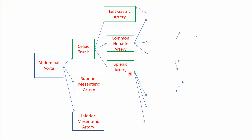The common hepatic gives the right gastric artery. As the names suggest, the left and right gastric arteries anastomose along the lesser curvature of the stomach, meaning they communicate along the lesser curvature.